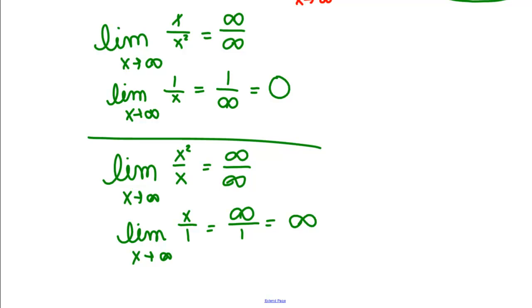Which leads to another interesting rule about infinity. Infinity divided by a fixed number is always going to be infinity. Half of infinity is still infinity. Half of the biggest thing you can think of is still the biggest thing you can think of.